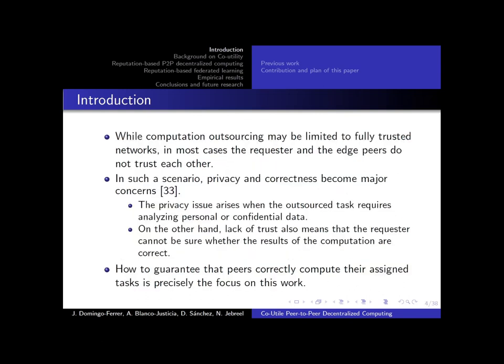Outsourcing computations in this way, however, may lead to trust problems between the task requesters and peers. On the one hand, this may lead to privacy issues, where the task requesters learn too much about the peers involved in the computations. And on the other hand, this lack of trust may lead to correctness issues, so the requester may not be able to ascertain whether the computations were carried out correctly. We focus in this work on guaranteeing the correctness of computations.